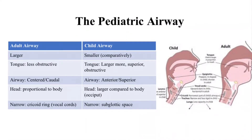In the pediatric or child airway, the airway is smaller, the tongue is larger, more superior, and obstructive. The airway is generally considered more anterior and superior, the head is larger compared to the body, and the narrowest space is the subglottic space or the area below the vocal cords.